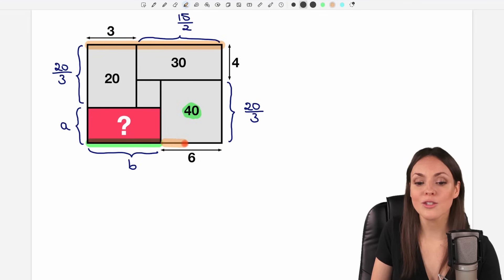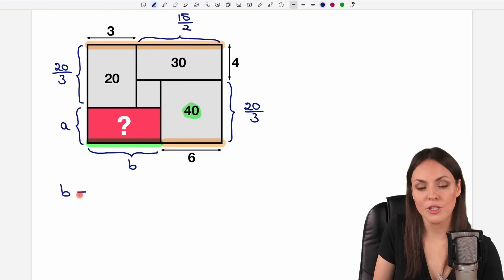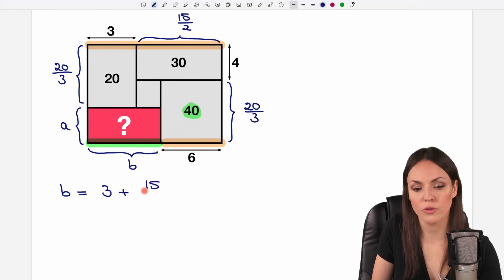So we can subtract this part from the entire side to get B. So to find B, we just take the entire side. So the 3 plus the 15 over 2. But this would be too long. So we just subtract this part that we don't want to have in there, the 6. So we subtract the 6. And now we only have to calculate this.